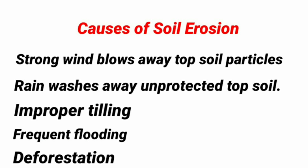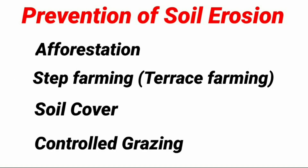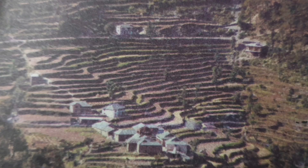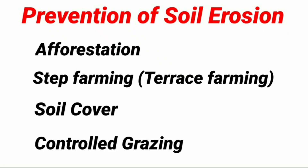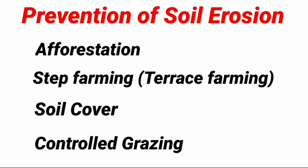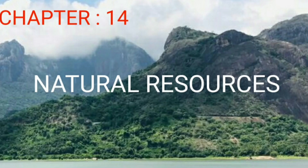How can we prevent soil erosion? By afforestation — planting more trees reduces soil erosion. By step farming, also called terrace farming, where farmers form a series of horizontal steps supported by walls to catch descending water, giving it sufficient time to percolate into the soil and nourish crops. By soil cover, which involves removing excess rainwater through small drainage canals formed around the field. By controlling grazing — grasses bind soil particles, so overgrazing should be prevented as it uproots grasses and causes erosion.